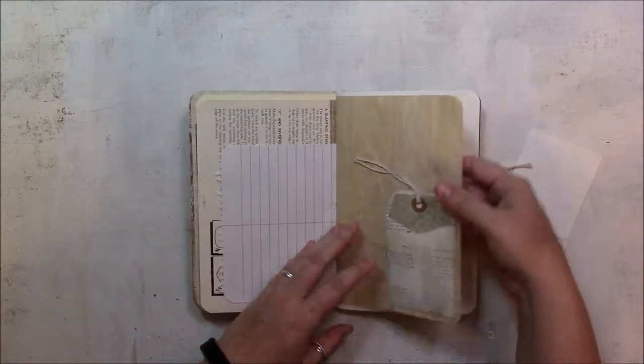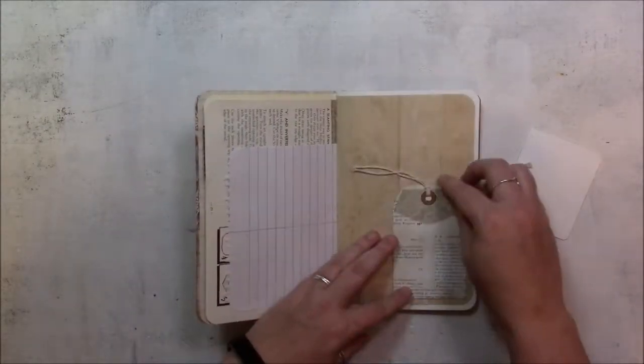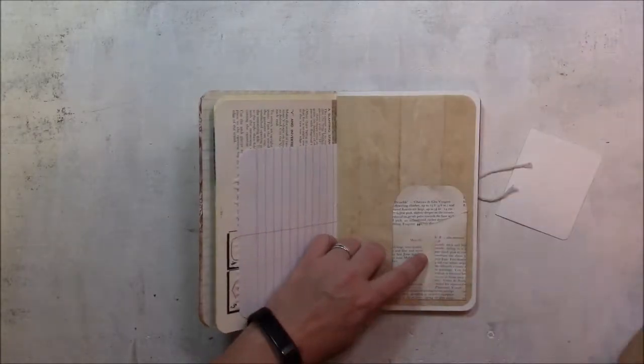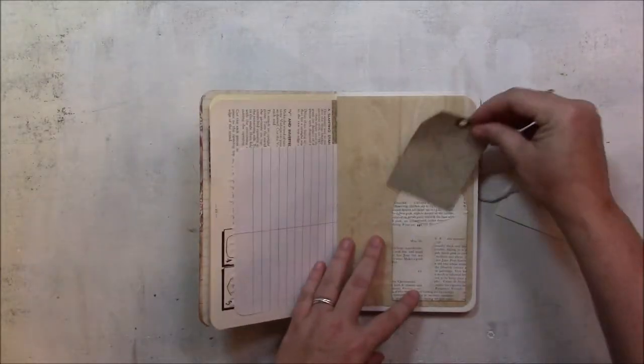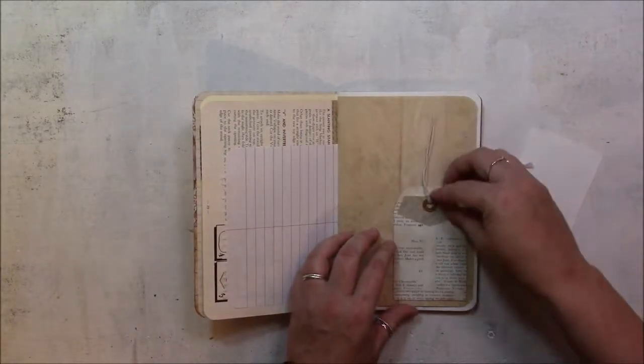But this is a paper bag and I added a handmade pocket that I made from a book page and there's just a little tag in there. I have a die for my cuddle bug that makes little pockets - I know you can do them without the die.